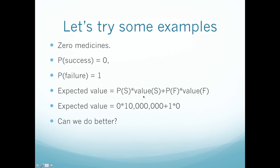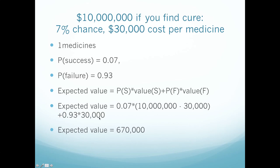plus the probability of failure times the value of failure. In this case, probability of success is zero times $10 million — no chance of finding it — one times, and there's no expenses if you don't do any medicines. So our expected value is zero. Can we do better? Let's try one medicine. Our probability of success is 7%, so 0.07, while our probability of failure is 0.93.